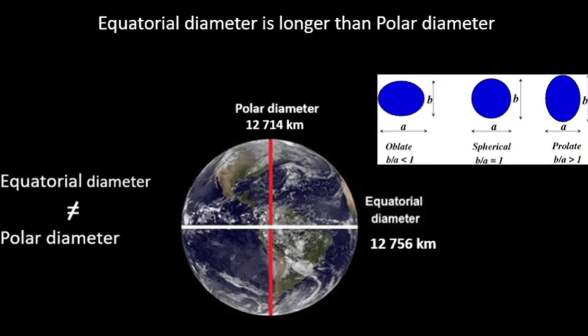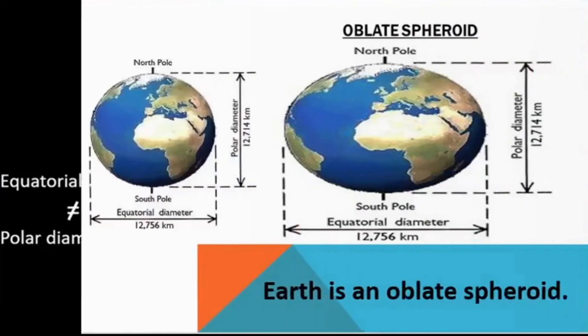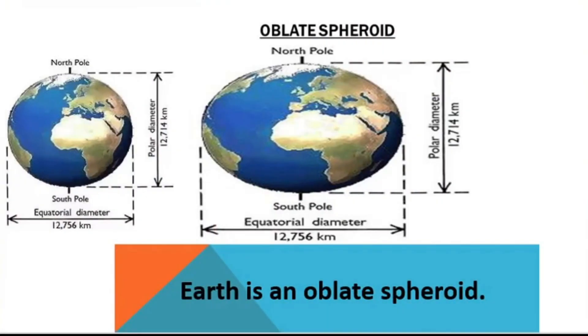Second situation: if B equals A, it is a full sphere. Third situation: if B is greater than A, it has a prolate shape. Accordingly, we can come to a clear conclusion about the actual shape of Earth. Since the equatorial diameter of Earth is longer than the polar diameter of Earth, Earth is an oblate spheroid.